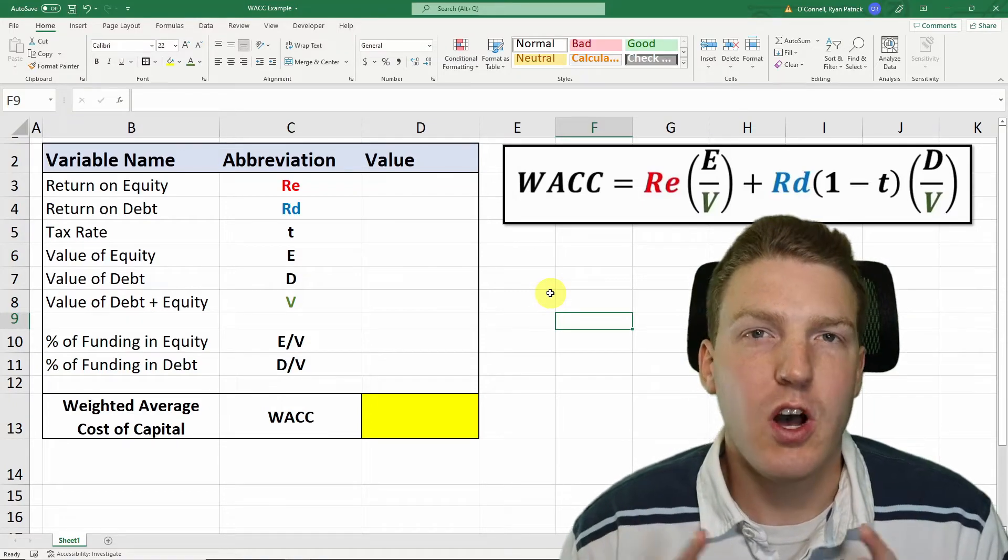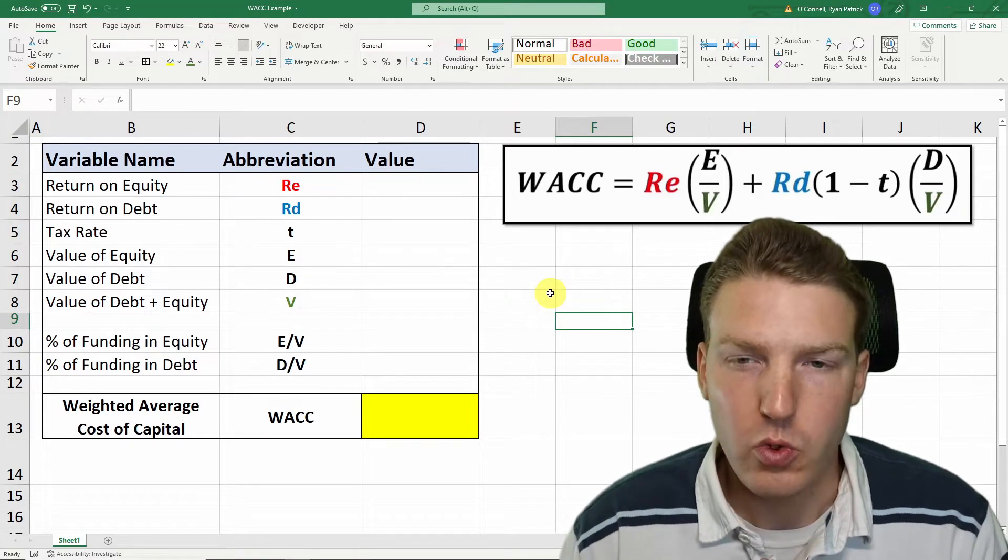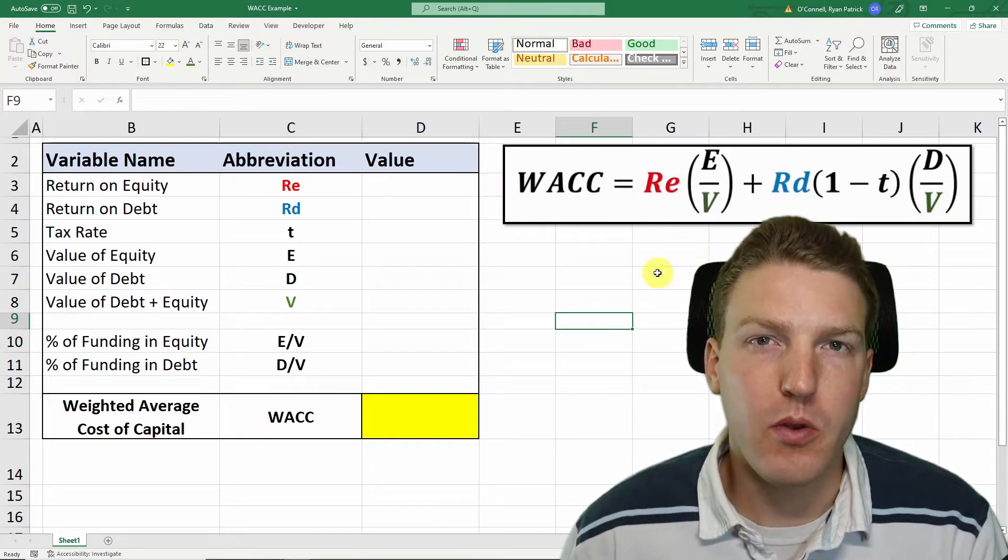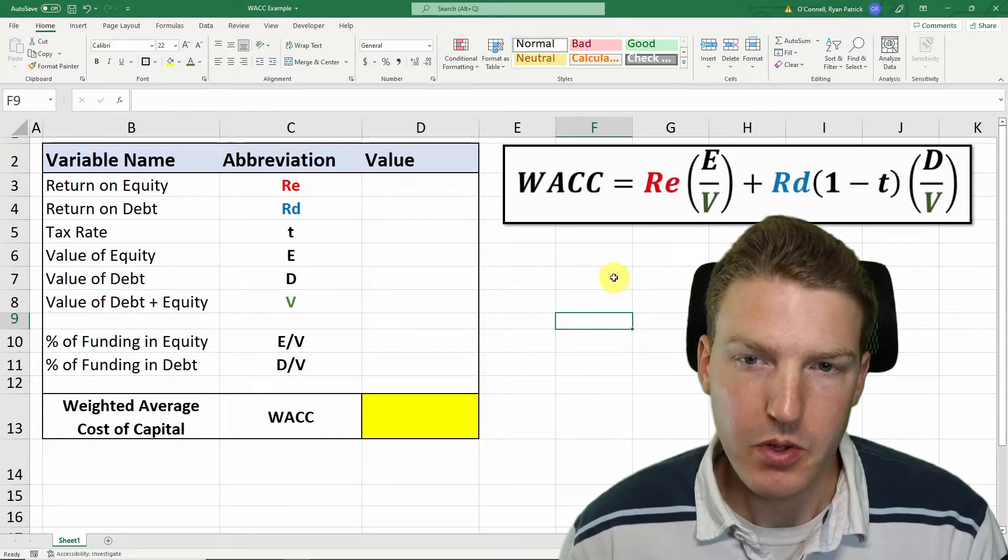Let's discuss weighted average cost of capital, or WACC, which at first appears to be an intimidating formula, but it's quite simple when we break it down variable by variable.